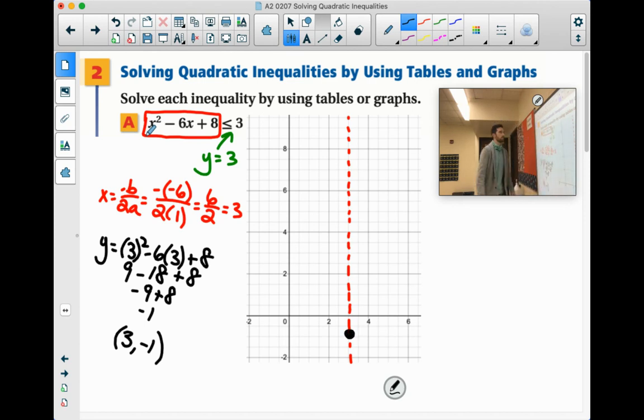We can figure out our y-intercept. Because remember, it's always just that last number. So our y-intercept will be at 0, 8, which is up here. We can reflect that to the other side. Let's see, 1, 2, 3, 4, 5, 6... 1, 2, 3, 4, 5, 6. And there's our parabola.